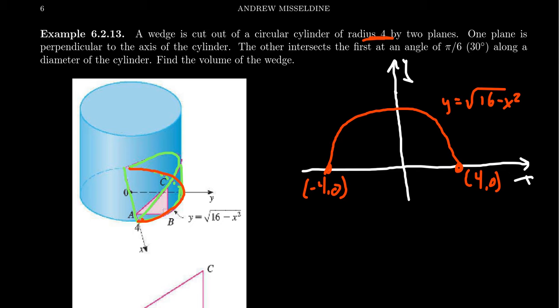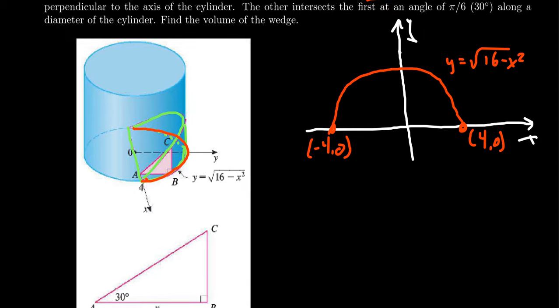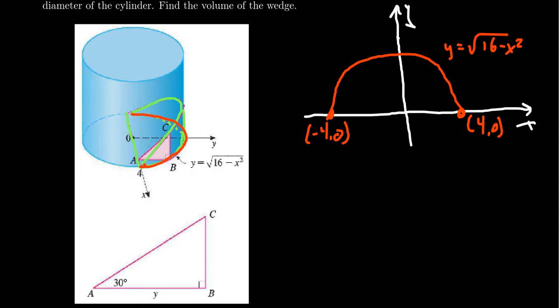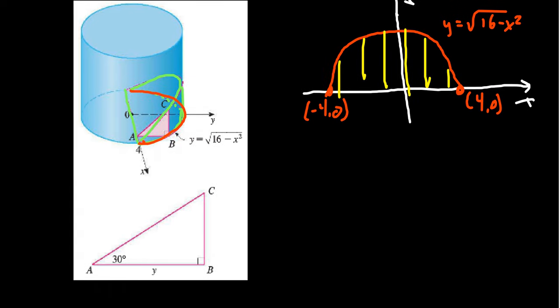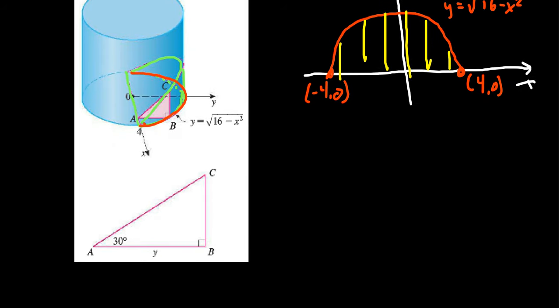And what we're going to be doing is stacking on top of this base cross sections perpendicular to the X axis. So we're seeing cross sections being stacked on the base like this. And the height of these cross sections will depend on where we are in the semicircle. But the cross sections are going to look like right triangles, right triangles resembling this shape over here. And we've chosen these right triangles so that the angle right here is going to be a 30 degree angle.